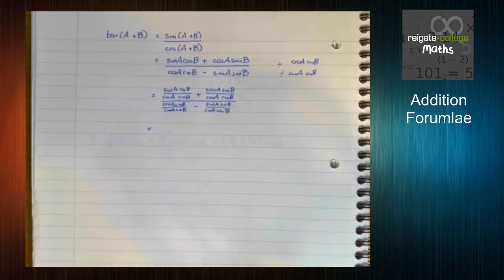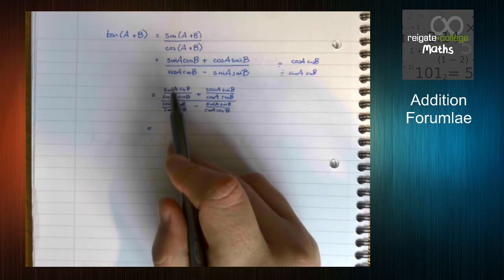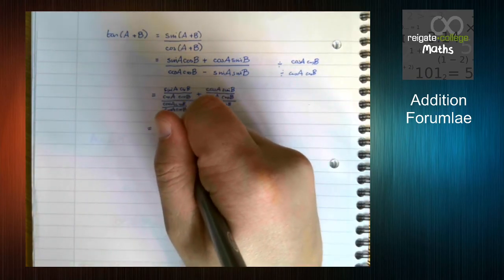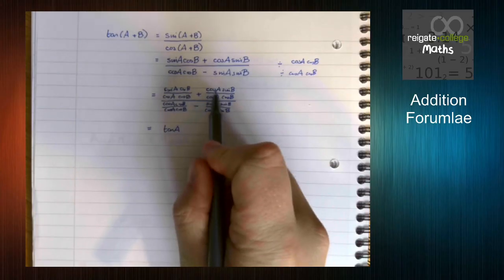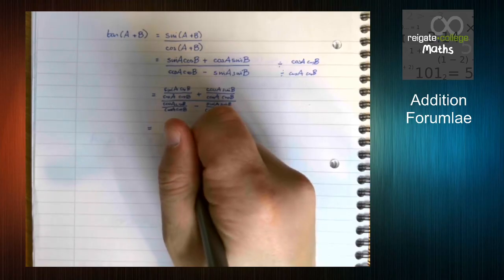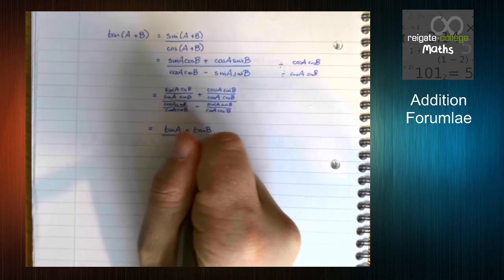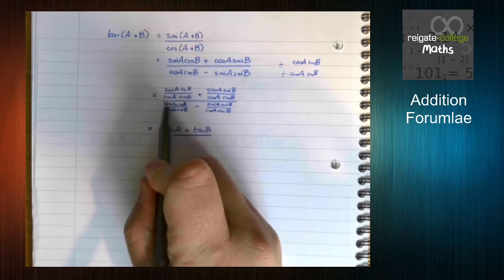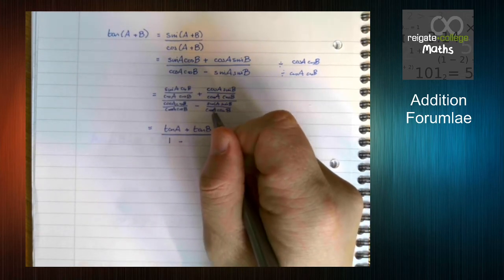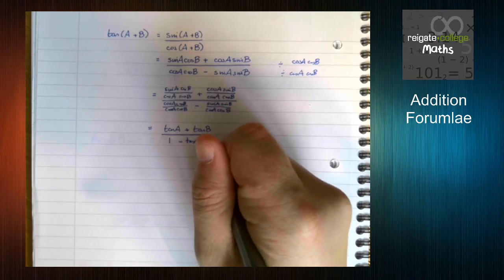So tidying all this up now, we can see the cos B's here are going to cancel and we're just left with sine over cos, which is tan. Here likewise the cos A's are going to cancel and we're left with sin B over cos B. We can see here everything's going to cancel and we're just going to be left with one. Then sin A over cos A times sin B over cos B is tan A tan B.